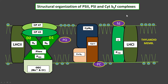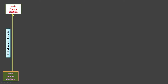Ferredoxin, present on the stromal side of PS1, reduces NADP⁺ to NADPH. This thylakoid membrane portion divides the chloroplast interior into stroma and thylakoid lumen. Now let's see how electrons travel in a non-cyclic manner — the Z-scheme — where electrons move from low energy to high energy levels upon absorbing light.